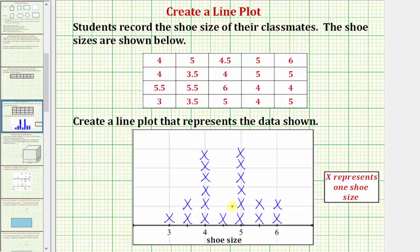And now our line plot is complete. Notice how once we create a line plot, it's a very easy transition to a bar graph. The height of these x's would be the height of the bars for the bar graph. We would just have to create a vertical number line to represent the frequency of each shoe size. I hope you found this helpful.